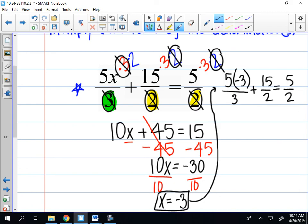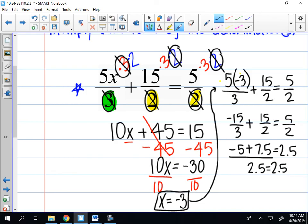So 5 times negative 3 is negative 15, divided by 3 is negative 5, plus 15 over 2 should equal 5 over 2. So 15 divided by 2 is 7.5, 5 divided by 2 is 2.5. You can use your calculator or your brain and you're going to find out that negative 5 plus 7.5 is 2.5, and that does equal 2.5, so we found a solution.